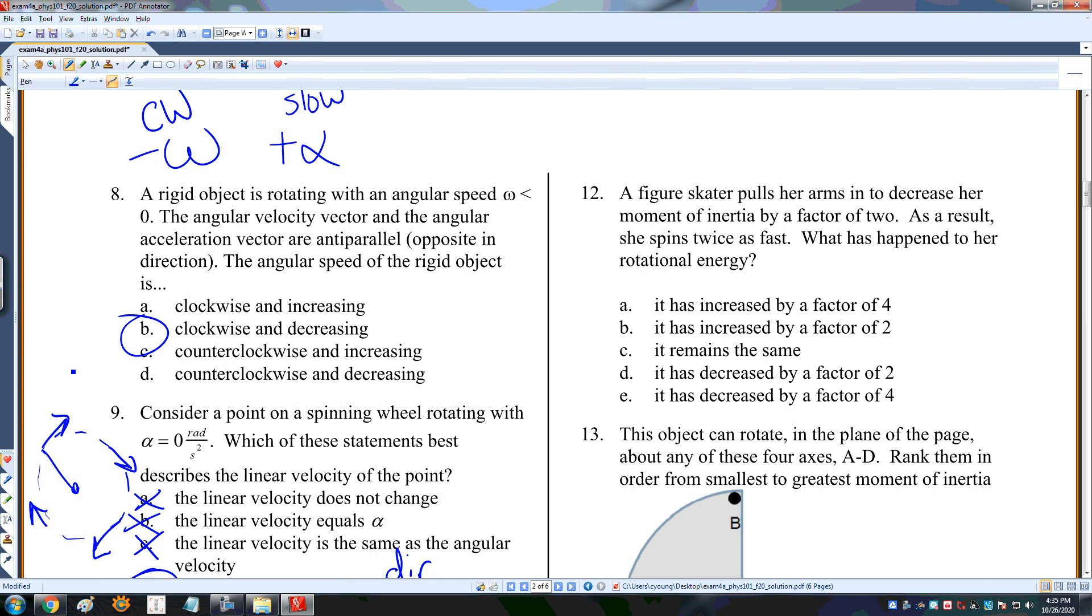Figure skater pulls her arms in to decrease her moment of inertia by a factor of 2, and she spins twice as fast. What happens to her rotational energy? She decreases I by a factor of a half, and omega goes up by a factor of 2. Her angular momentum is conserved. Rotational energy is one half I omega squared. I'm having I, and I'm doubling omega, so I get a factor of 4 divided by 2, so it's increased by a factor of 2.